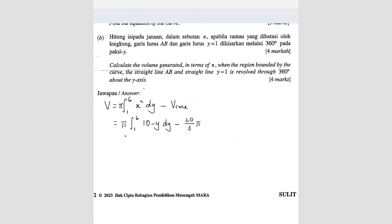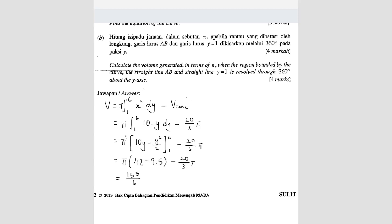Integrating gives 10y minus y²/2, evaluated from 1 to 6. Substituting 6 gives 42, and substituting 1 gives 9.5. So we have 42 minus 9.5, minus 20/3. The final answer is 155/6 π cubic units.